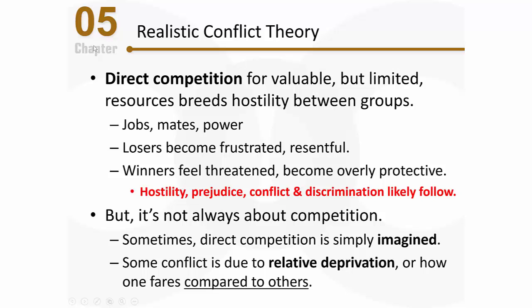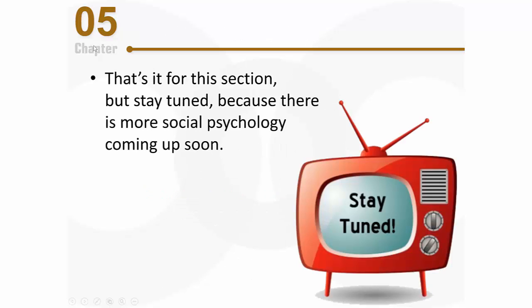Another example: as the rich get richer and the poor get poorer, we see a widening of the gap between the haves and the have-nots. When poor people perceive there's even more distance between themselves and the American dream, they're likely to develop hostility toward those who have money, resources, and success. That's what would be predicted by realistic conflict theory.